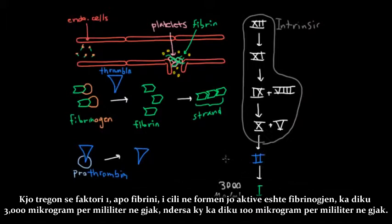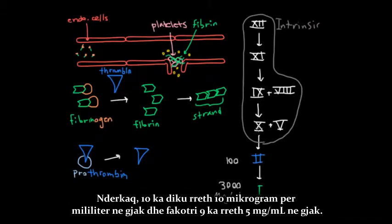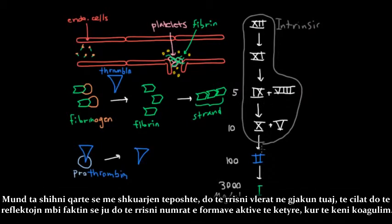Meanwhile, 10 has about 10 micrograms per milliliter in blood, and factor 9 has about 5 micrograms per milliliter in blood. And so you can really see that as you go down this thing, you're increasing your amounts in your blood, which reflects the fact that you're also going to increase the number of active forms of these when you have a clot.